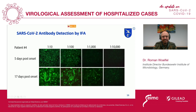We performed immunofluorescence tests to identify seroconversion and antibody production in those patients. From one patient, we took samples at day five post onset and day 17 post onset, and you can clearly see the increasing antibody production. At day 17 post onset, you have antibody titers up to 1:10,000, while at day five you see antibody production starting but less than 1:1,000 in dilution.